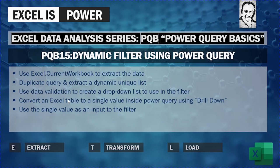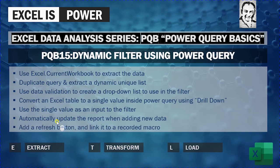We'll use that single value as an input for the filter. The workflow is: start in Excel, convert to table, send to Power Query, convert to a single value, use it in the filter, then send it back so the report updates automatically. At the end, we'll create a refresh button linked to a recorded macro so that clicking it refreshes all data and actions.